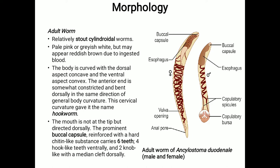The adult worms are relatively stout, cylindrical worms that are pale pink or grayish white, but may appear reddish brown due to ingested blood. The body is curved with the dorsal aspect concave and the ventral aspect convex. The anterior end is somewhat constricted and bent dorsally in the same direction of general body curvature, and this cervical curvature gives it the name hookworm.